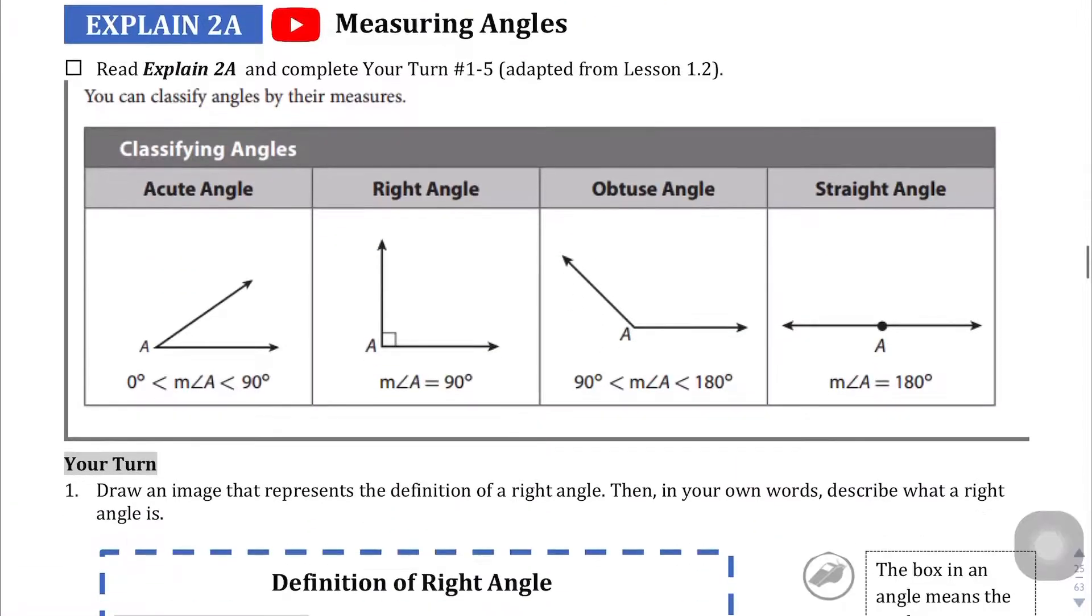Measuring Angle. There's four types of Angles they're going through here. Acute Angle where the Angle is less than 90 degrees. A right Angle where it is equal to 90 degrees. An obtuse Angle where it's greater than 90 degrees but less than 180. And then a straight angle that is equal to 180 degrees.